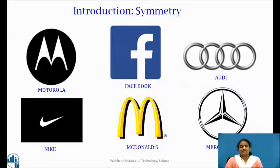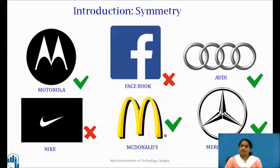Students let us first discuss about symmetry. Now here you can see some images which are very famous and familiar to you. Please pause the video and think that which images are symmetrical and which are not symmetrical. Yes, students you are correct. Images of Motorola, Audi, Mercedes-Benz, McDonalds are symmetrical and the images Facebook and Nike are not symmetrical.